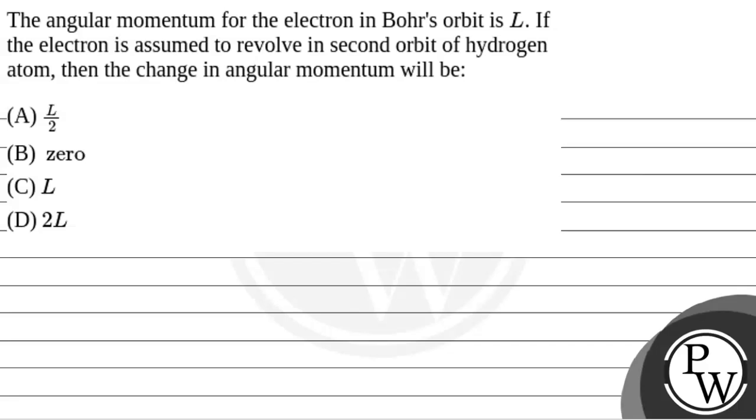Hello Bacho, let's read the question. The question says that the angular momentum for the electron in Bohr's orbit is L. If the electron is assumed to revolve in second orbit of hydrogen atom, then the change in angular momentum will be?